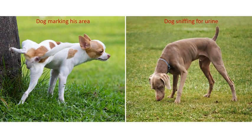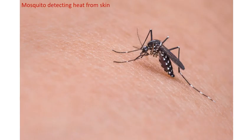Similarly, dogs mark out their own area on the road. They can make out if another dog has come into their area by the smell of its urine. Mosquitoes also find you by the smell of the sole of your feet and the heat of your body.